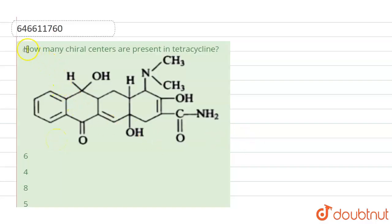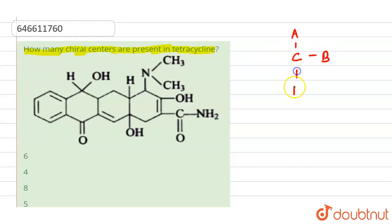The question is: how many chiral centers are present in tetracycline? Looking at this structure, we need to identify the chiral centers. Chiral centers are carbons that have four different substituents — four different ligands attached to them.